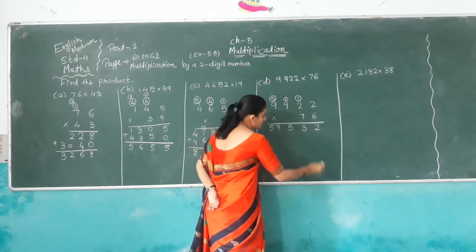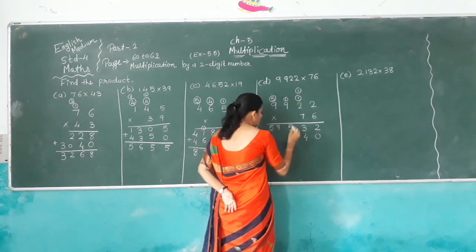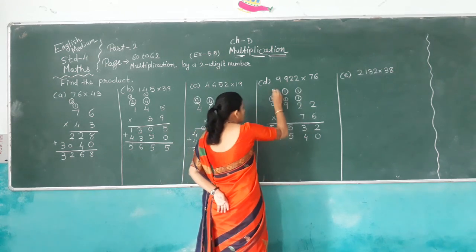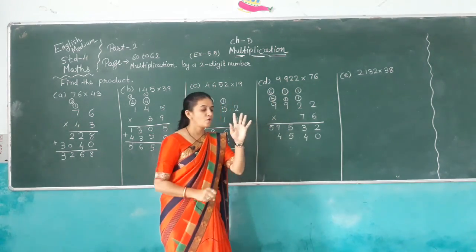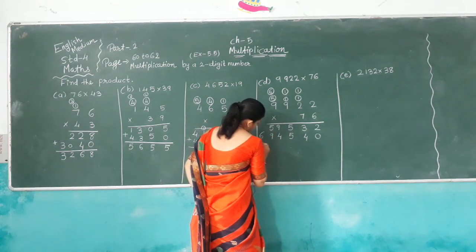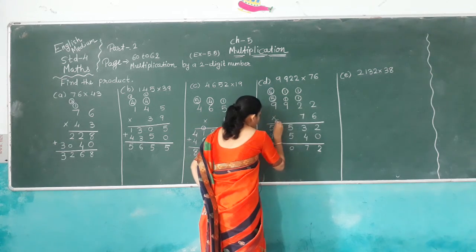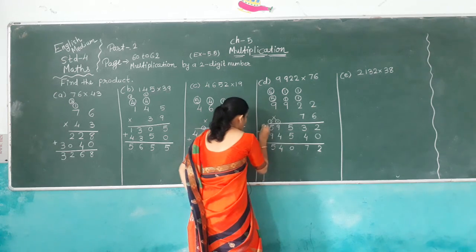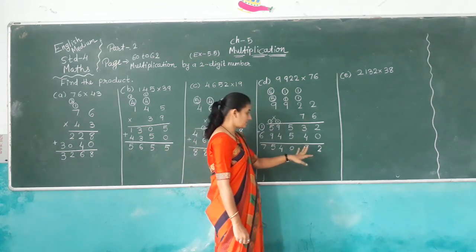Now we count the tens place. Keep 1, 0. 7 times 2 is 14, carry over 1. 7 times 2 is 14, plus 1 is 15, carry over 1. 7 times 9 is 63, plus 1 is 64, carry over 6. 7 times 9 is 63, plus 6: counting 64, 65, 66, 67, 68, 69. Add both numbers: 2 plus 0 is 2, 3 plus 4 is 7, 5 plus 5 is 10 carry 1, 9 plus 1 is 10 plus 4 is 14 carry 1, 9 plus 1 is 10 plus 5 is 15 carry 1, 6 plus 1 is 7. So we get answer 754,072.